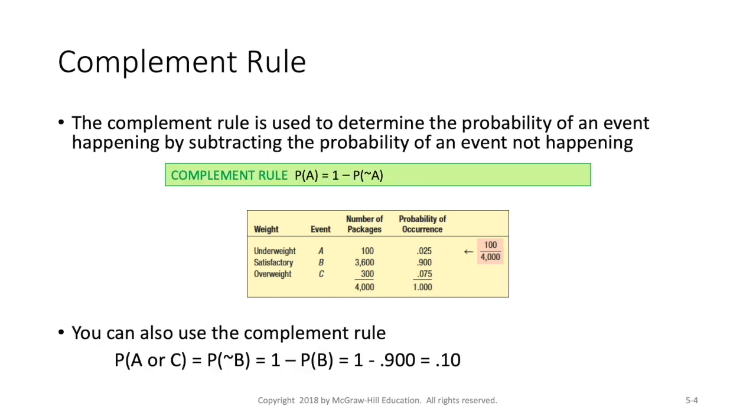The complement rule can also be an effective tool to use. And sometimes it's really useful because it might be easier to calculate the probability of an event happening by simply determining the probability of it not happening. And so we could use the complement rule to again find out what the probability is of the package being either overweight or underweight.